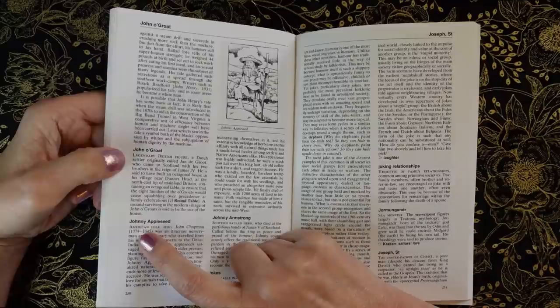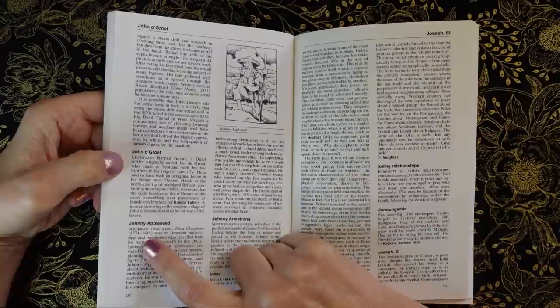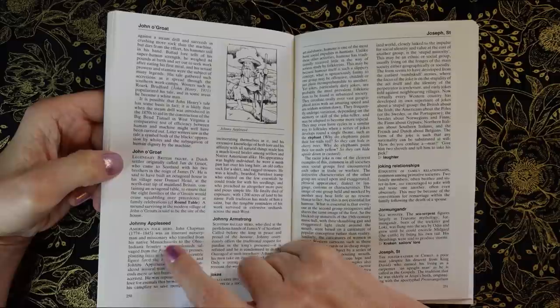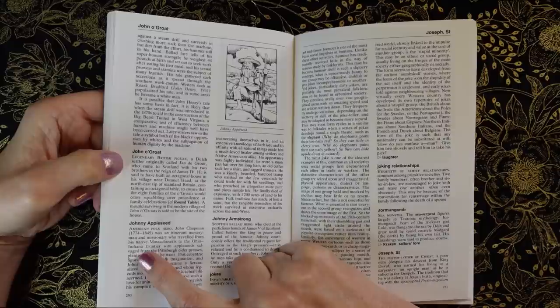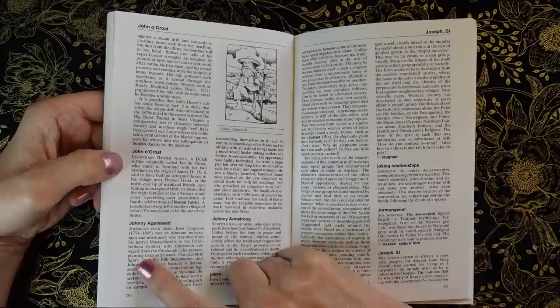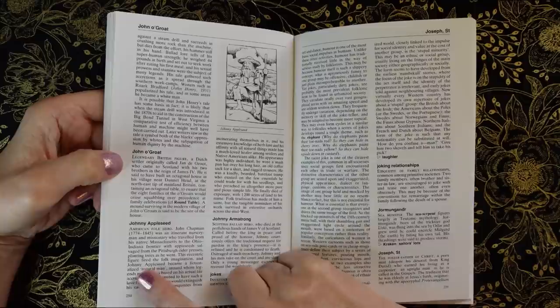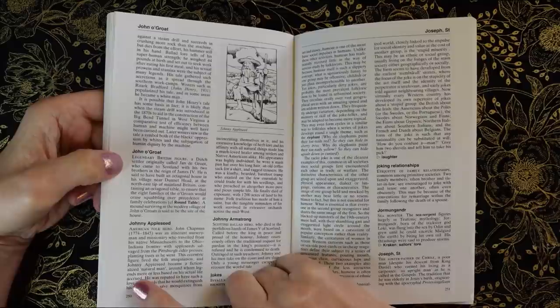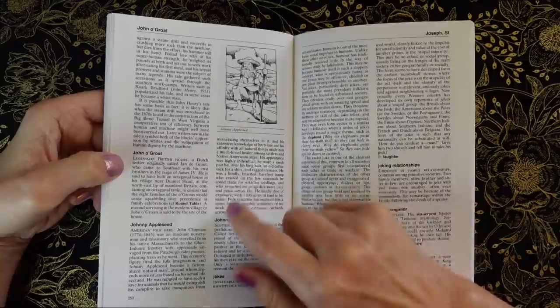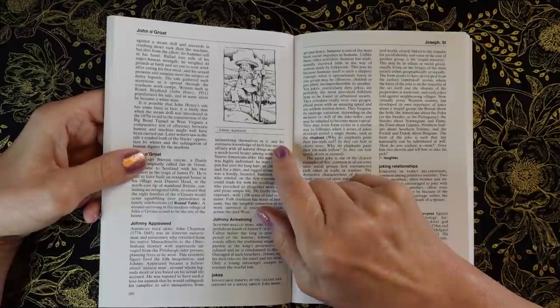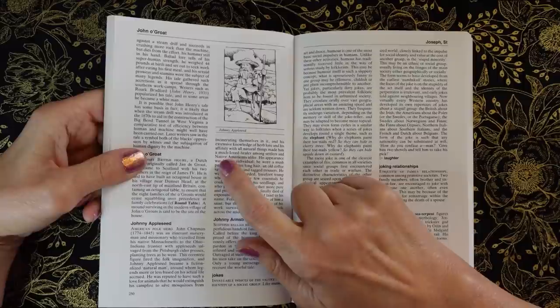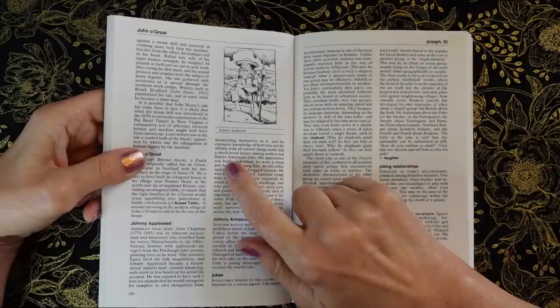Johnny Appleseed, American folk hero John Chapman, 1774 to 1845, was an itinerant nurseryman and missionary who traveled from his native Massachusetts to the Ohio, Indiana frontier with apple seeds salvaged from the Pittsburgh cider presses, planting trees as he went. This eccentric figure fired the folk imagination and Johnny Appleseed became a fictionalized natural man around whom legends more or less based on his actual life accrued. He was reputed to have such a love for animals that he would extinguish his campfire to save mosquitoes from incinerating themselves in it.